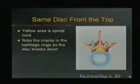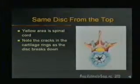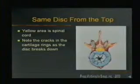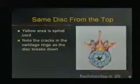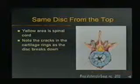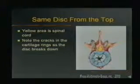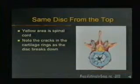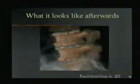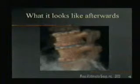Seen now from a top view, as the disc goes through this breakdown process, cracks develop in the drying-out cartilage called annulus fibrosis, and the jelly-like substance in the center called nucleus pulposus begins to ooze through the cracks. Here we see what an artist rendered as a photograph of a degenerated spine.